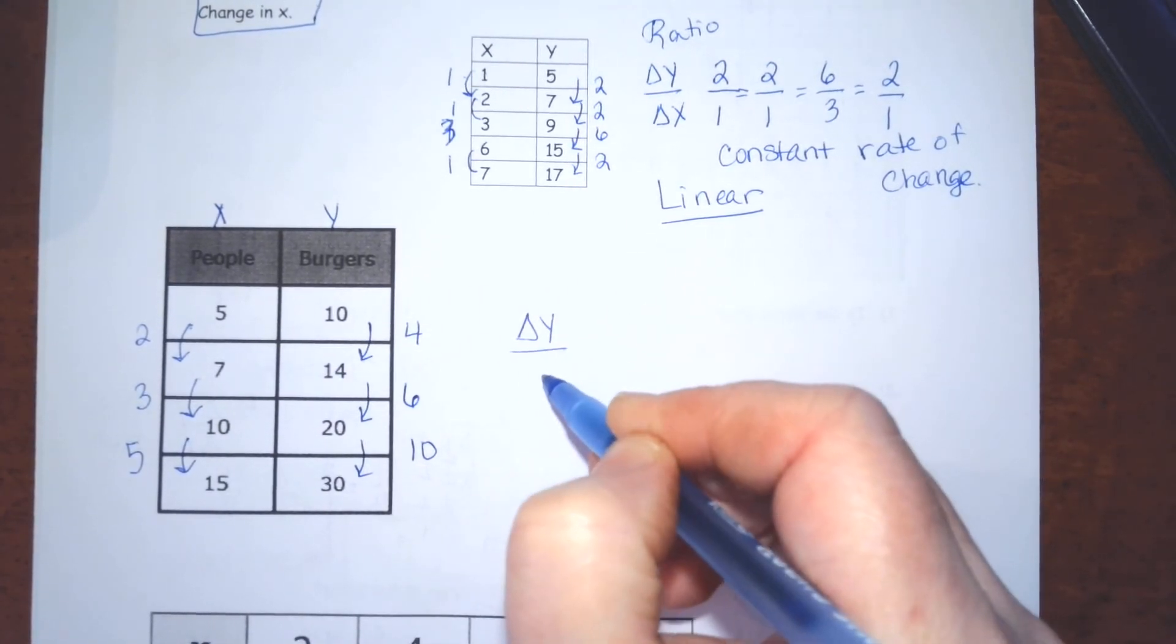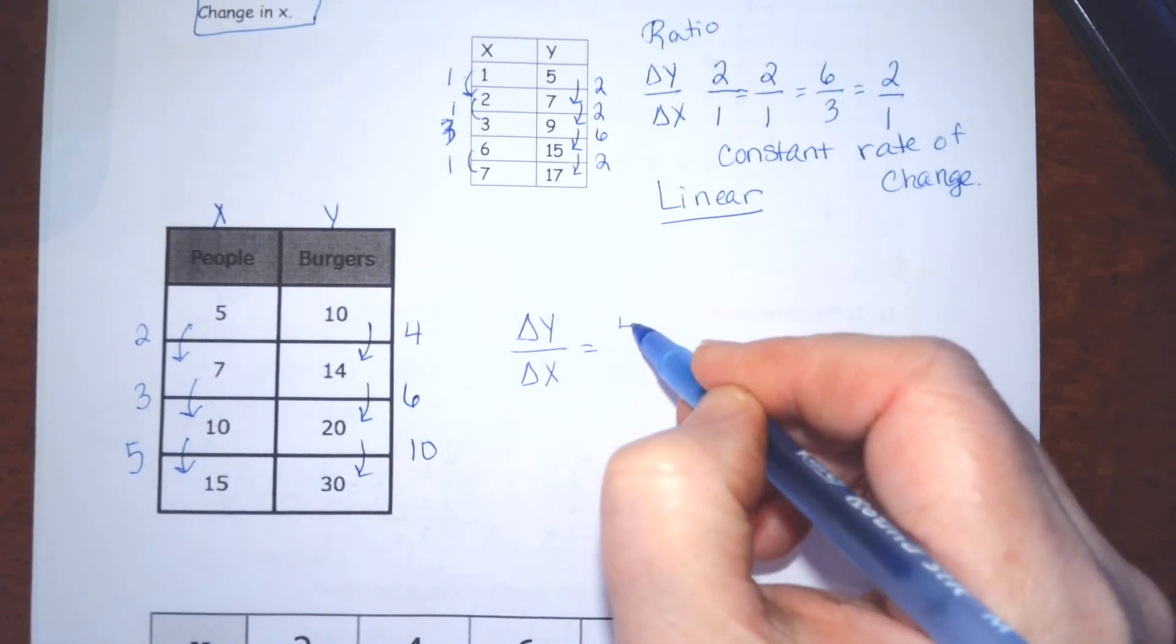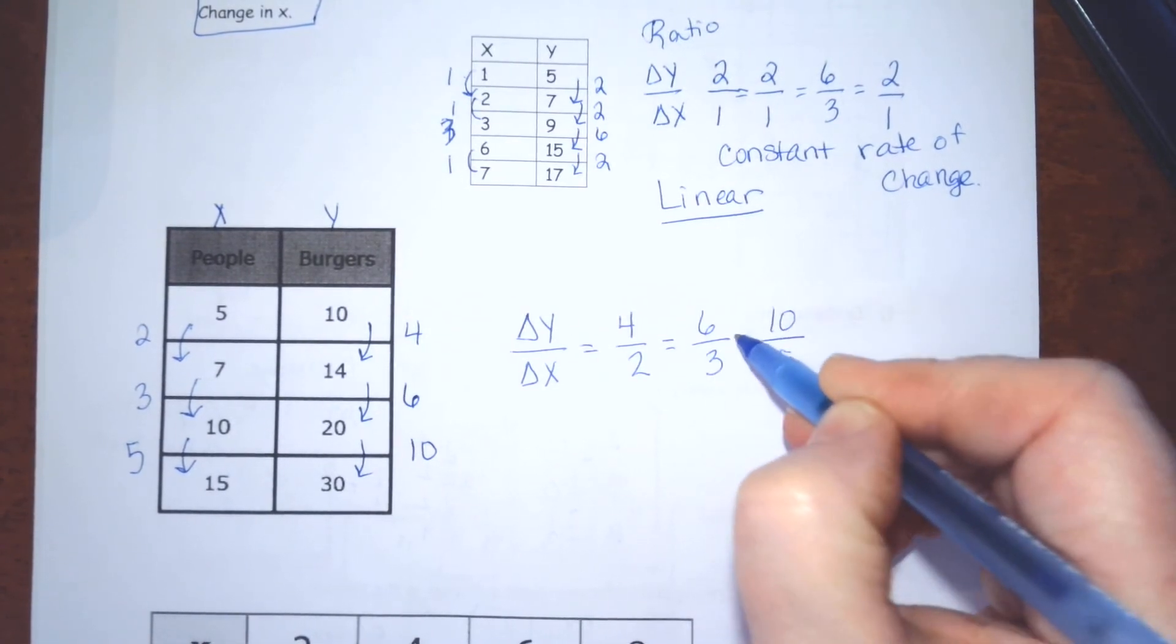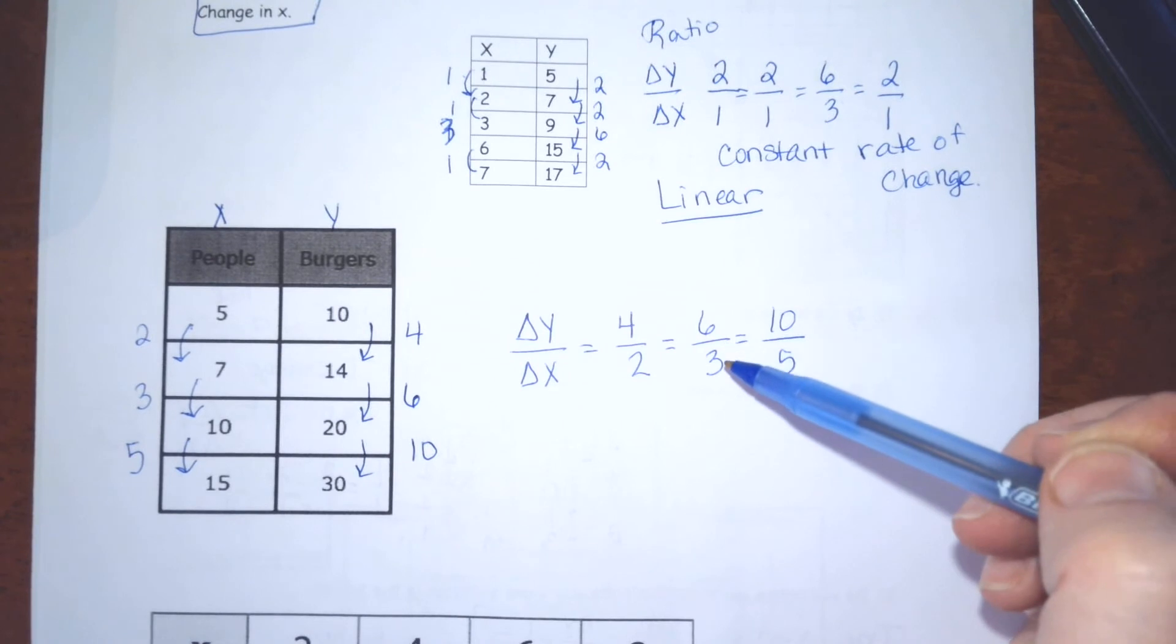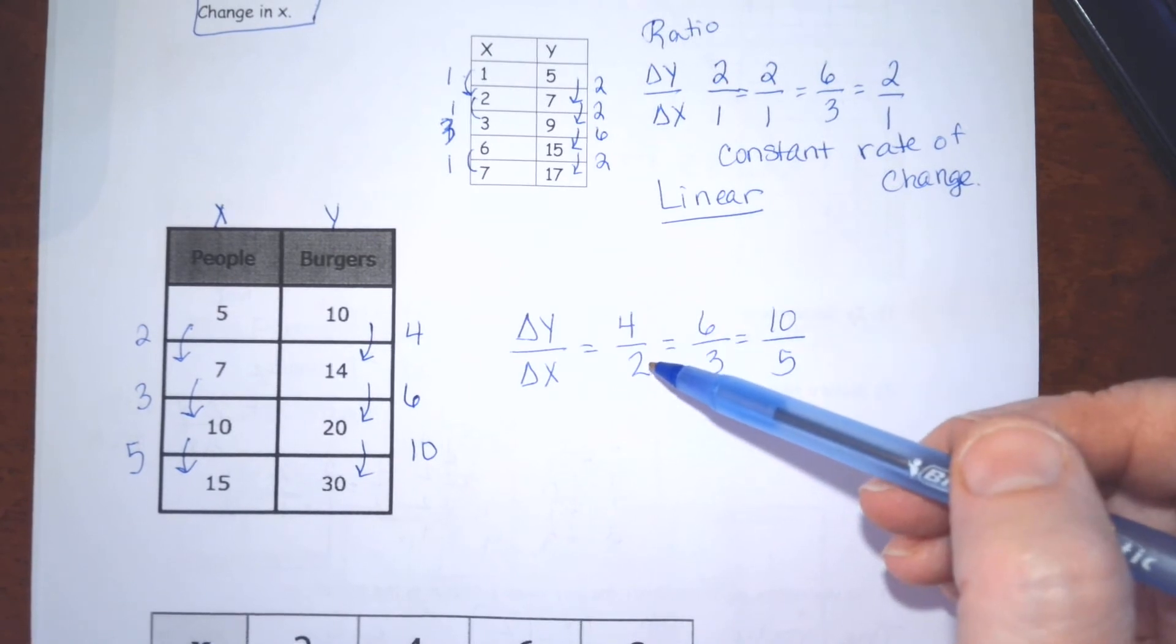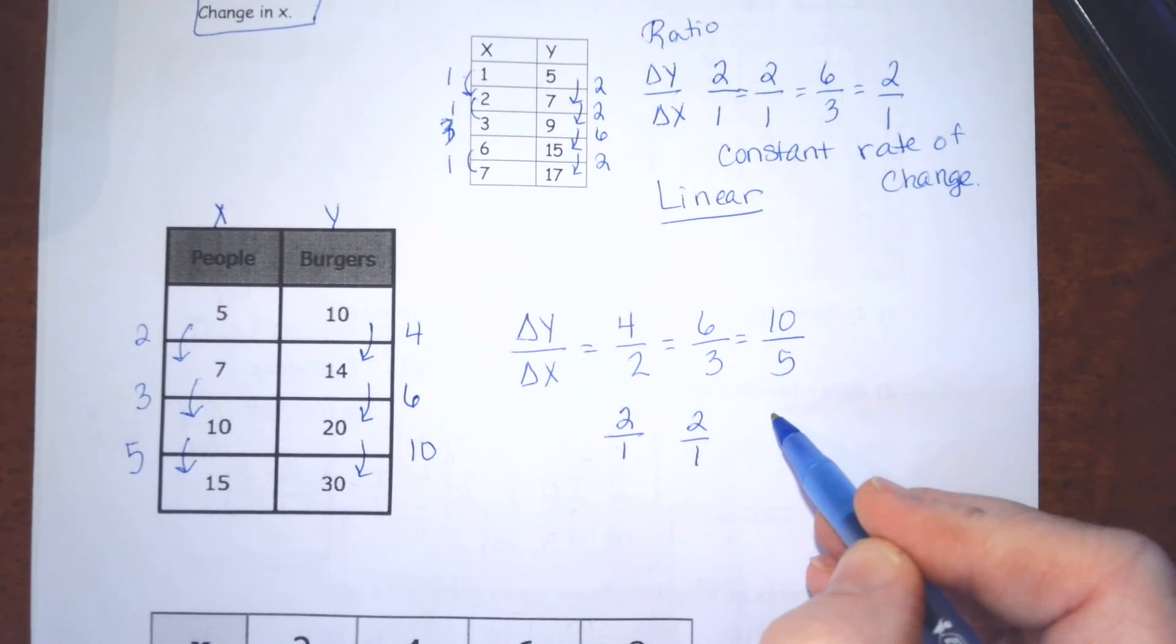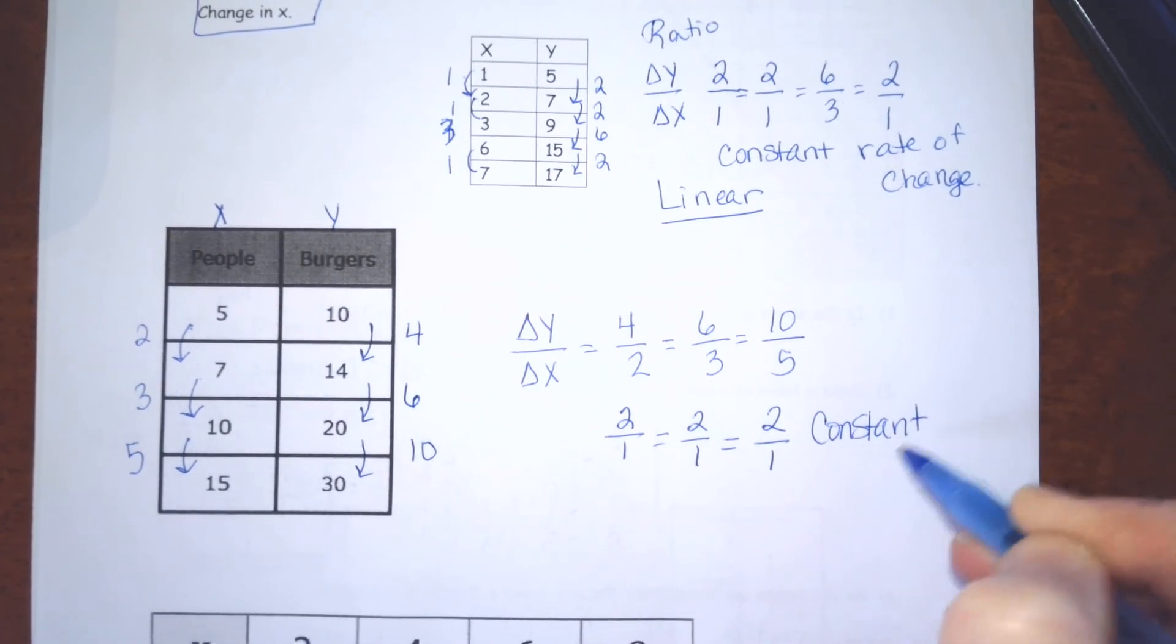Now, I'll need to find the ratio of the change in y to the change in x. So, the first ratio is 4 over 2. And the second ratio is 6 over 3. And the next one is 10 over 5. Now, I went ahead and put those equal signs in there. I knew they were going to turn out to be the same. But even though our change is a little bit different each time, the ratio is the same. 4 over 2 is 2 over 1 when simplified. 6 over 3 is 2 over 1 when simplified. And 10 over 5 is 2 over 1 when simplified. So, we have a constant rate of change.